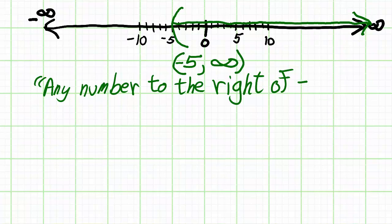Now, notice the parenthesis. What the parenthesis says is that x, that is any number in the number system, is going to be greater than or to the right of negative 5.